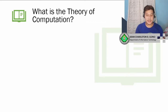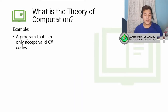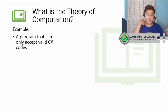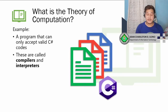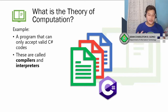Let's have another example. Can we create a program that can only accept valid C-sharp codes? Is it possible for a computer to accept valid C-sharp codes? The answer is yes. Those are what we call compilers and interpreters. A program that can only accept valid C-sharp codes is computable.